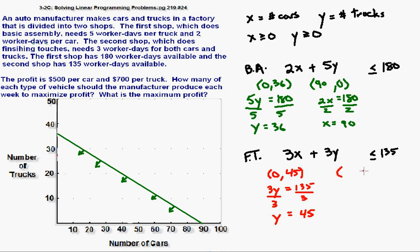Doing the same thing, letting Y be zero, so I get 3X equals 135. Divide both sides of that equation by three, and I get X equals 45.